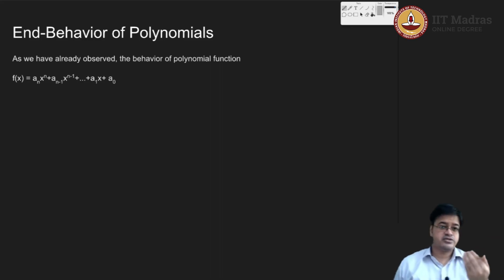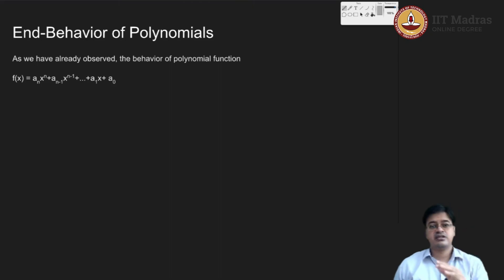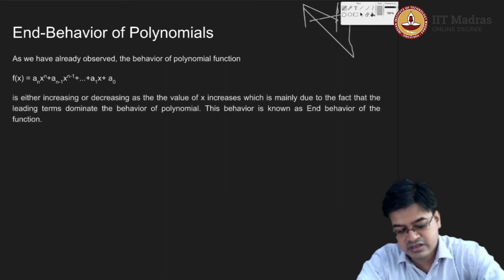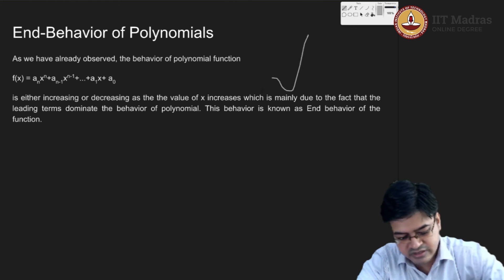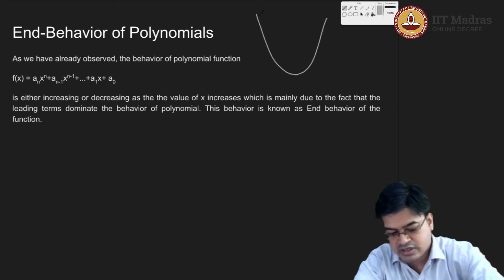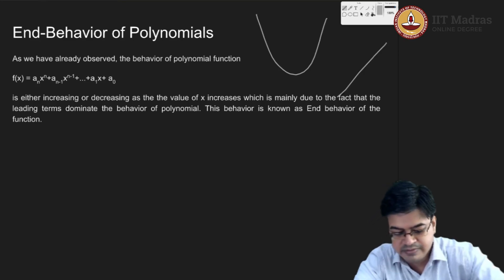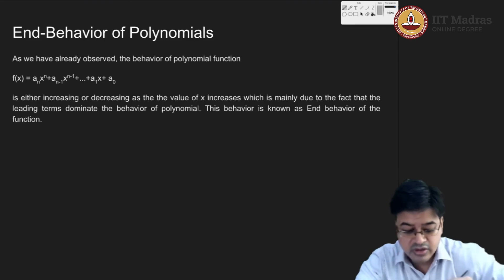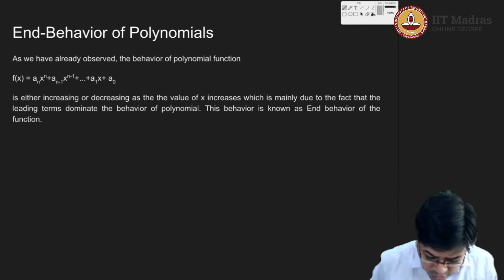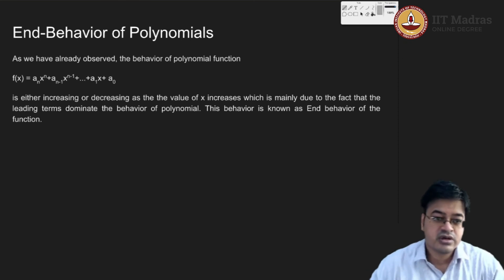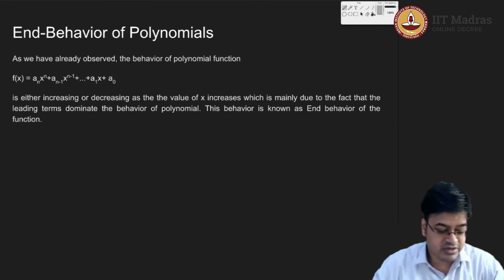From the graphs seen in earlier lectures and this lecture, it is clear that polynomial functions are either increasing or decreasing based on the way they behave. For example, a polynomial can go like this, or it can be a straight line if it is linear, or it can move in various ways — all these are polynomial functions. So what is the behavior of a function after it has passed through all the roots? That is the question that was troubling us.